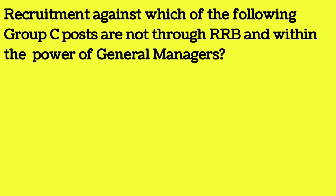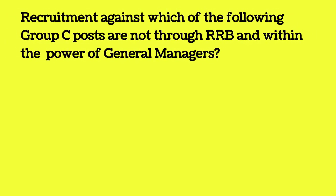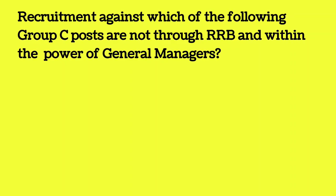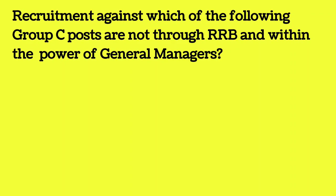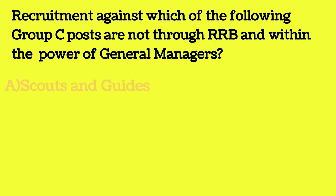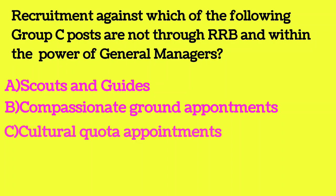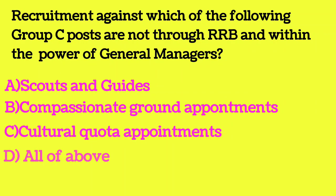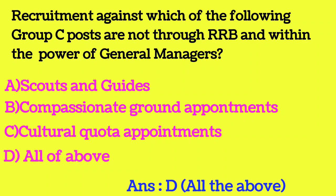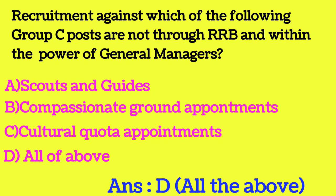Recruitment against which Group C posts is not through RRB and is within the power of General Managers? Option A: Scouts and Guides quota. Option B: Compassionate ground appointments (CG appointments). Option C: Cultural quota appointments. Option D: All of the above. The answer is all of the above.